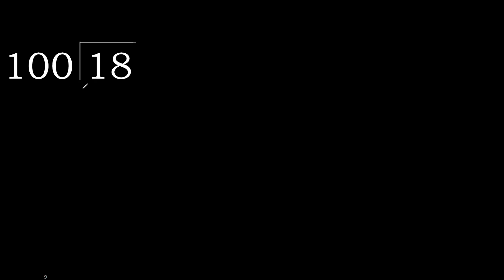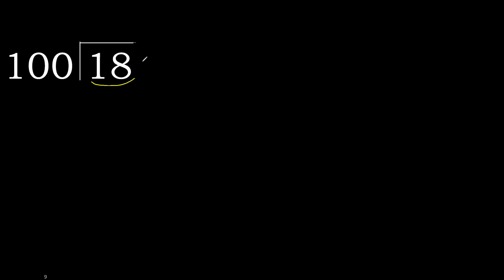18 divided by 100. 1 is less, therefore next. 18 is less, therefore next. There is no number, therefore complete — always complete with 0. Here: 0 point.